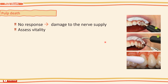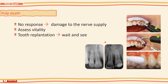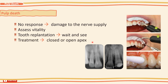Except where a tooth has been replanted, it is best to adopt a wait-and-see approach if in doubt about vitality. When pulp death has occurred, subsequent treatment depends upon whether the apex is closed or open, as we have discussed in detail in the previous tutorial.